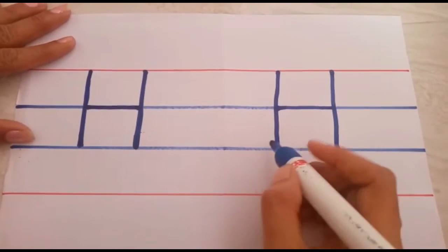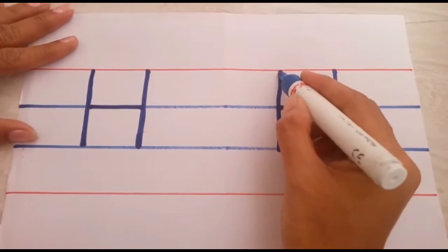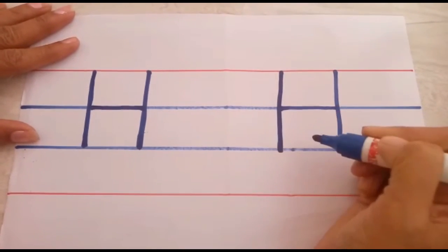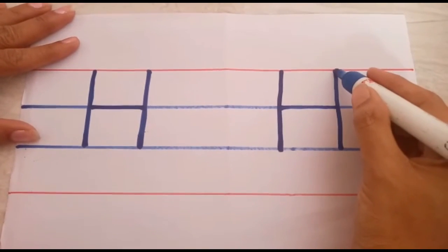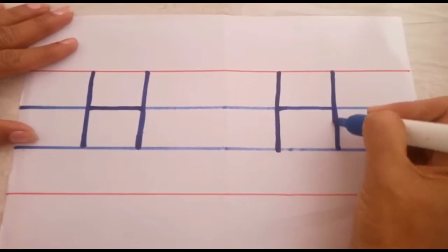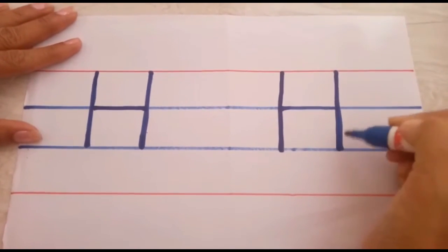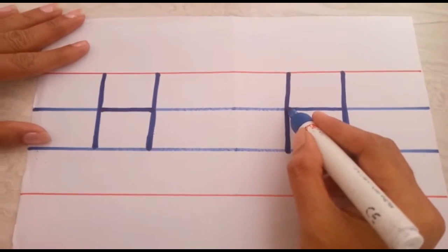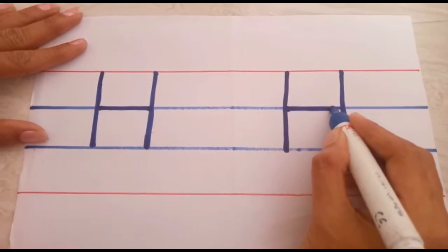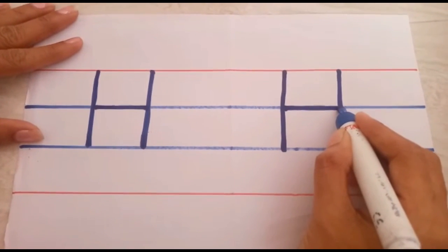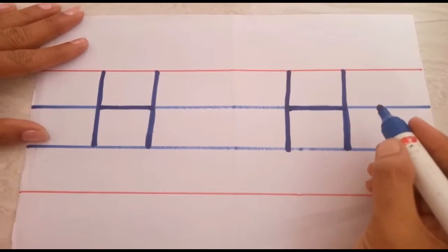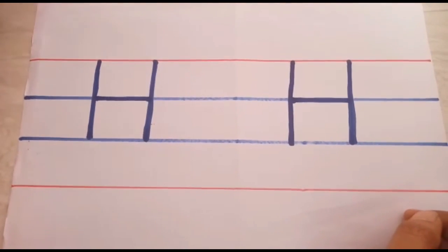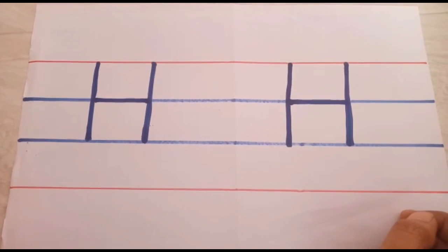Shall we repeat once again, children? Red line to third blue line. One standing line, children. One more standing line. Red line to third blue line. We will go to second blue line. We will put one small sleeping line, children. Which letter is it? H letter! H letter!